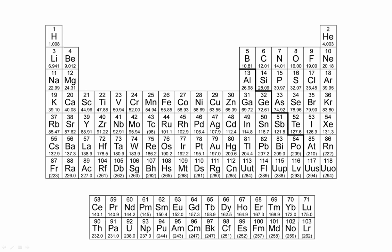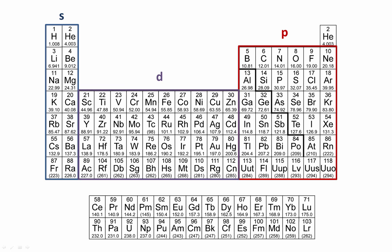We'll start with our periodic table. We can assign our different blocks to the periodic table. The s-block is our first two columns, including helium. Our p-block is the last six columns. Our d-block is our transition metals, and our f-block is our inner transition metals.